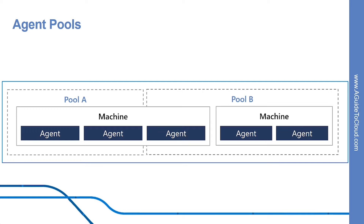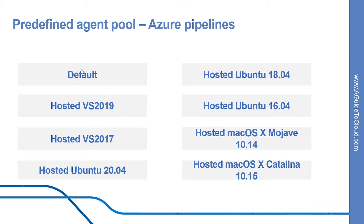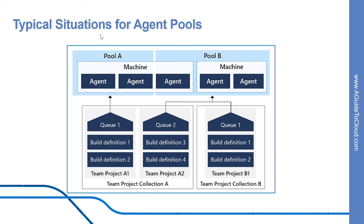Also, each project agent pool can use only one organization agent pool. These are the list of organization agent pools provided by default for you. Each of these Microsoft hosted organization agent pools is exposed to each project through a corresponding project agent pool. By default, all contributors in a project are members of the user role on each hosted pool. This allows every contributor in a project to author and run build and release pipelines using Microsoft hosted pools.